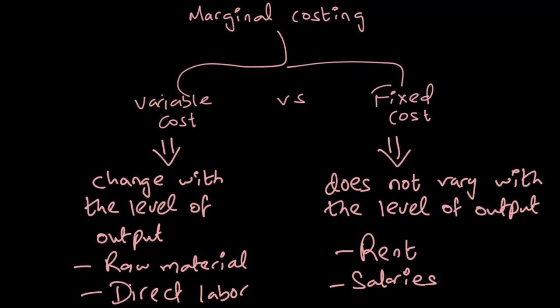In marginal costing's view, the relevant cost is only variable cost. Marginal costing is basically used for short-term decision making. In the short run, the only relevant cost is variable cost; fixed cost is assumed to be constant in the short run, which is why marginal costing decisions revolve around variable cost.